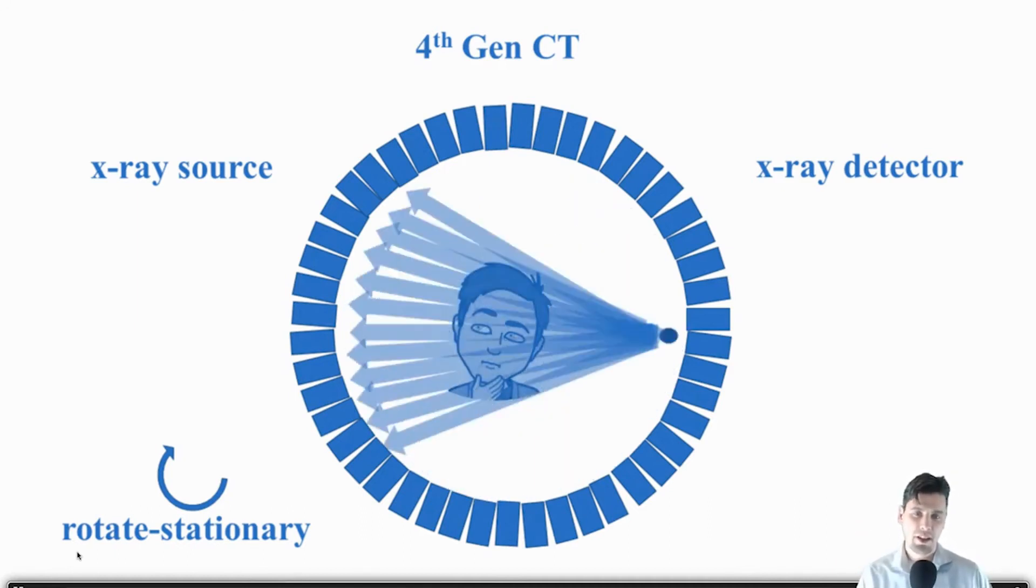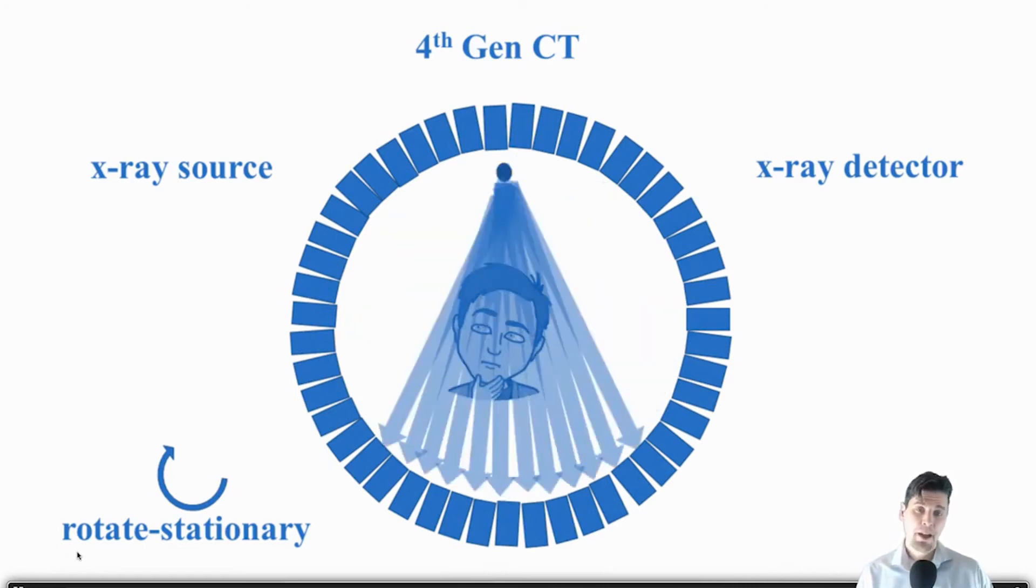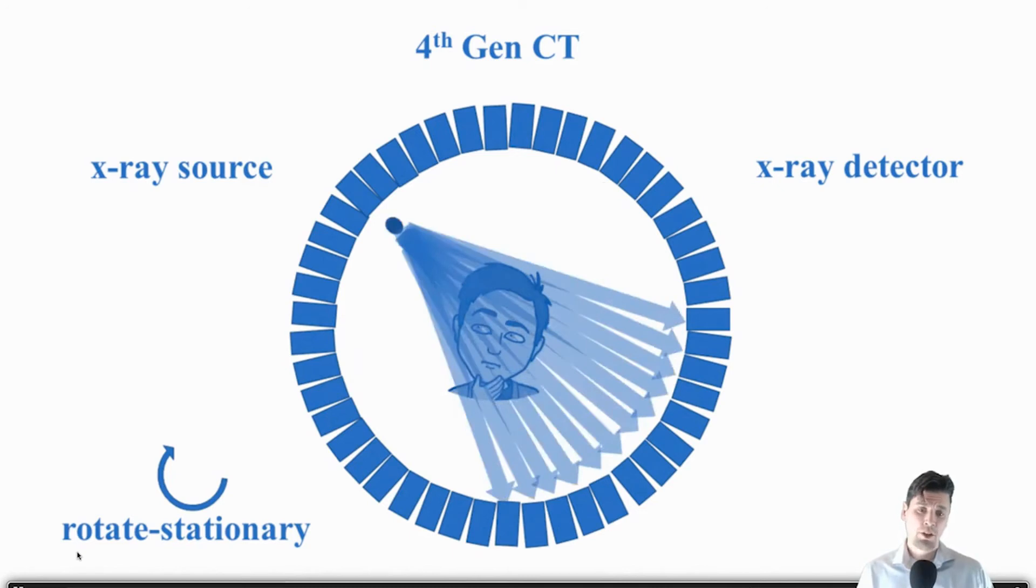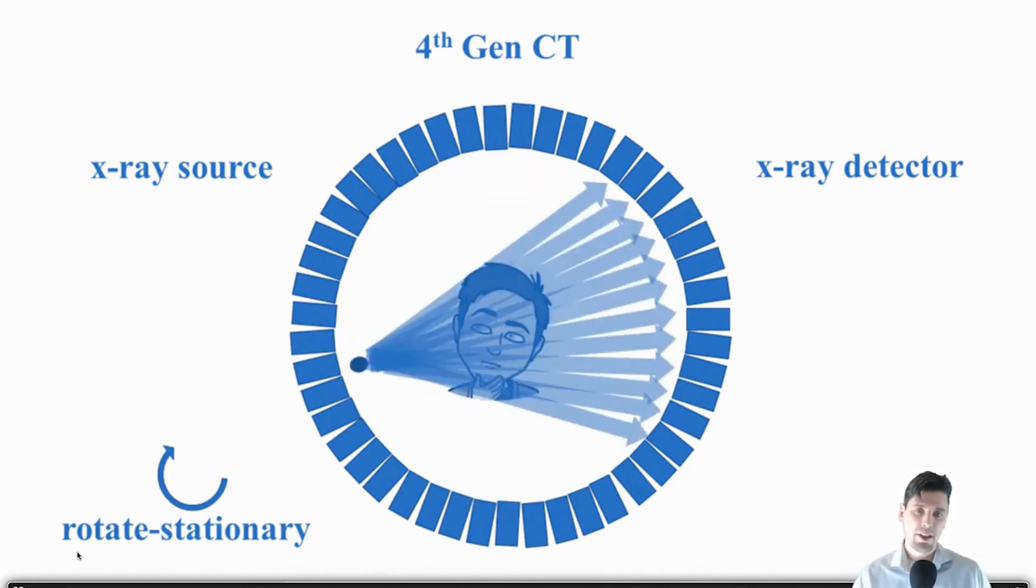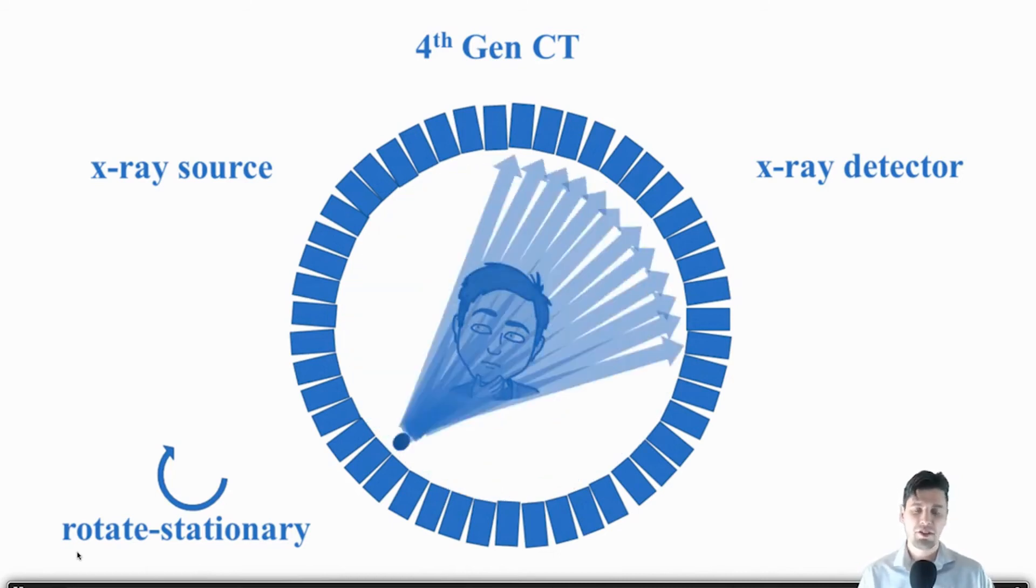In fourth generation CT now you have a ring essentially of detectors. So more detectors are necessary and then your source is moving around and the detectors are stationary. So this sometimes is called rotate stationary geometry.